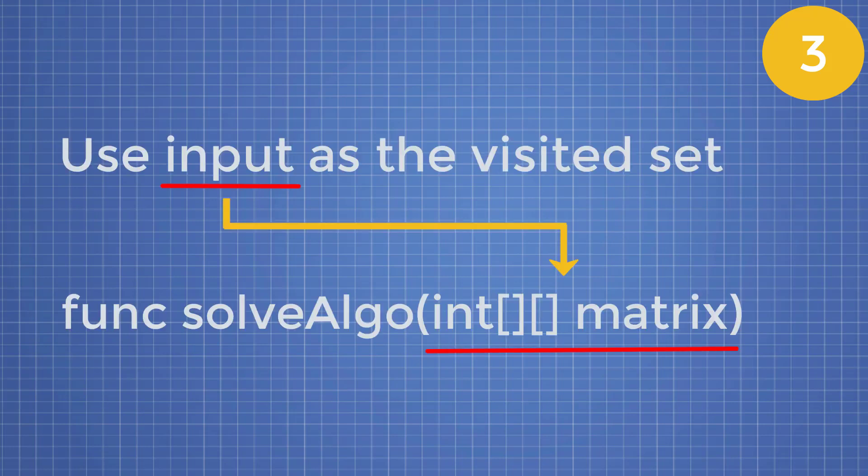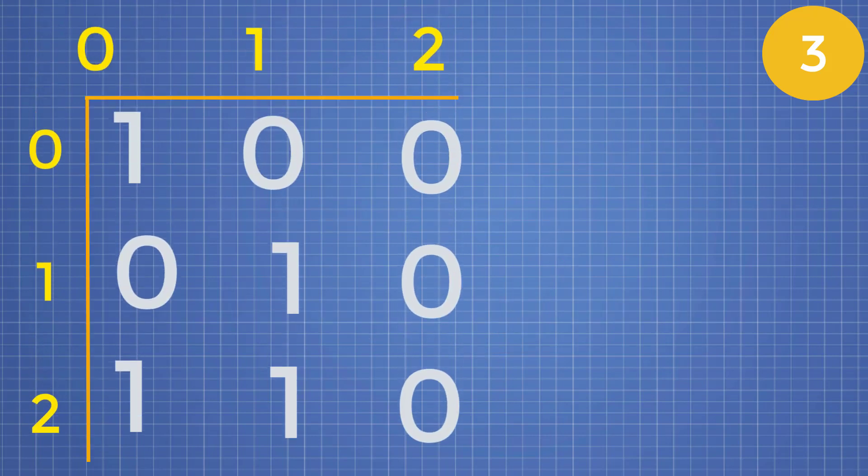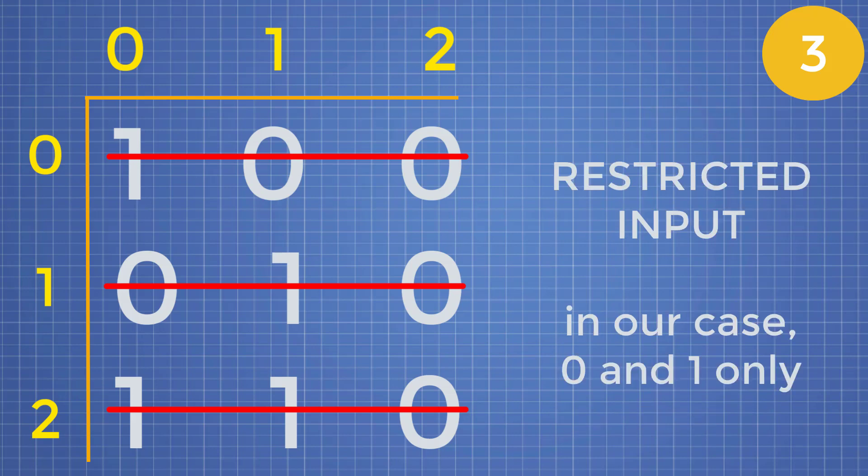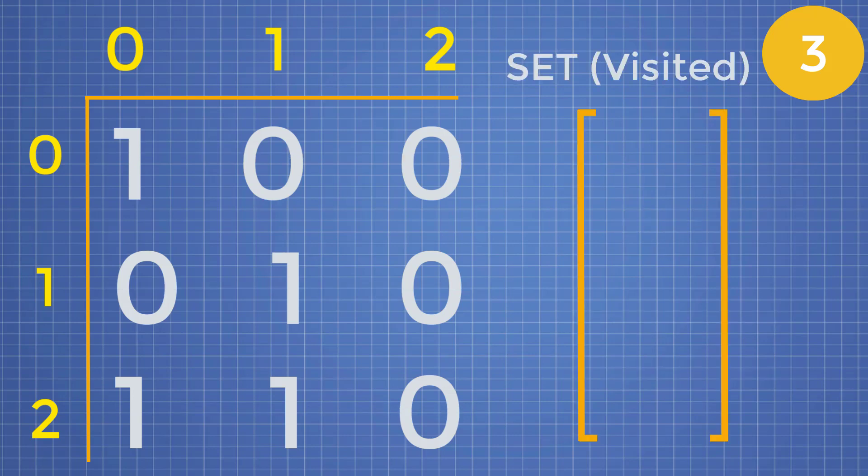On to our last tip, tip number three, this is relating to really any general graph problem. And that is to use your input to your function as a way to keep track of previous calculations that you've made. So once again, let's jump into example. So this makes more sense. So let's say we have the following matrix and this matrix only contains numbers that are zeros or ones. And what this means is that our input to this function is actually restricted. In many graph questions, you'll find that the problem at hand is to search through this given input and maybe find the maximum of something minimum of something. And it's usually on a restricted input.